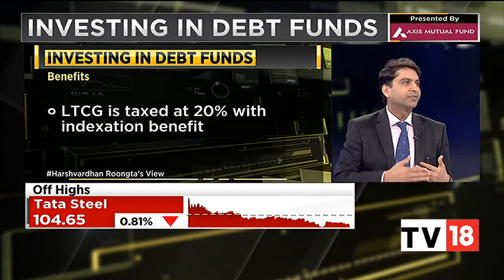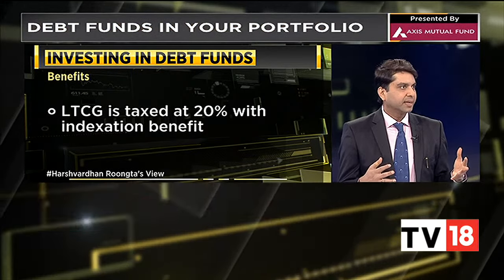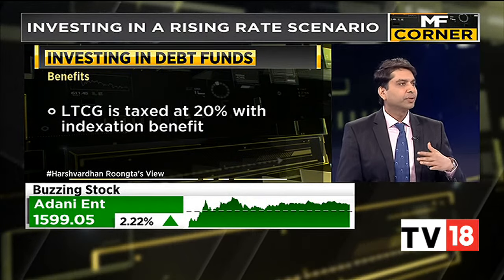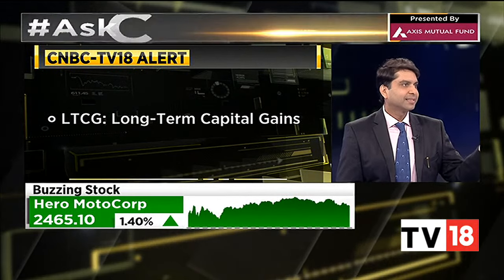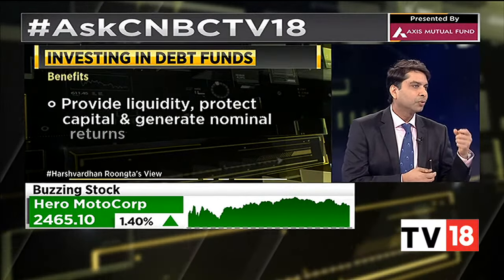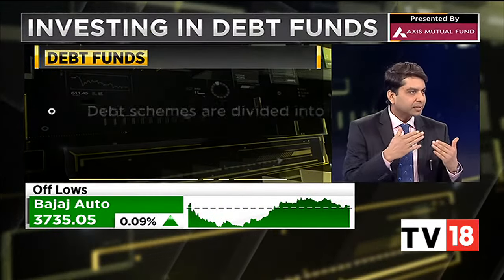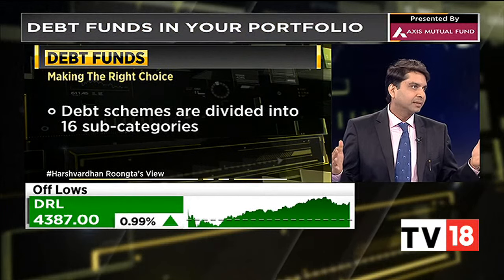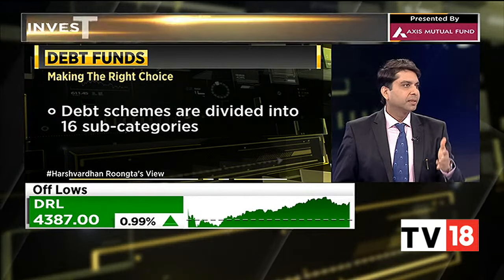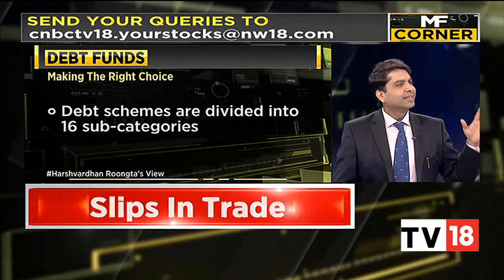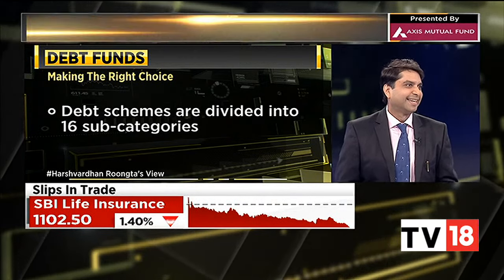SEBI has defined the categories of mutual funds. On the debt side, there are 16 categories you can invest into. For somebody who doesn't want to take any risk at all — no duration risk, nothing — you have an overnight fund. That's the lowest, least volatile product. Going up from there you have liquid, ultra-short, money market, low duration, short-term, medium-term, corporate bond, banking PSU, credit risk, all the way to long-term bonds and constant maturity. There are 16 such categories — there's a product for everybody.